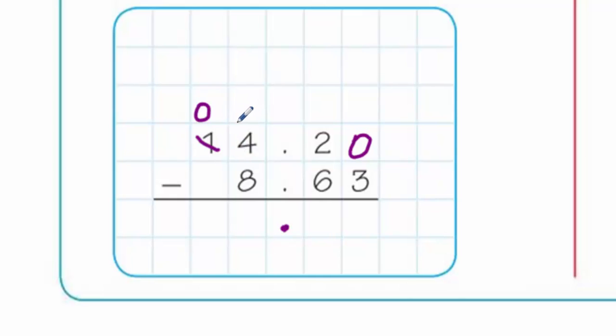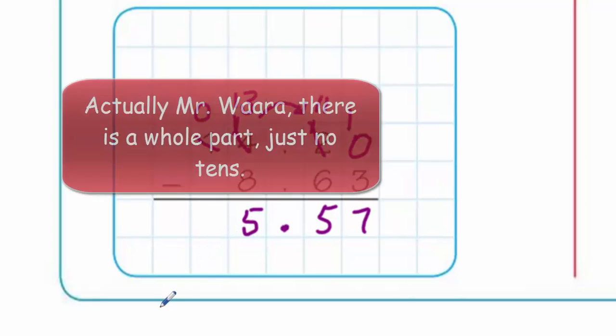He's happy to loan one of his tens to his buddy the ones column. He gives him that ten, showing we now have fourteen ones. He needs to loan because everybody's needing help, so he's going to loan one of his whole numbers. He's going to convert one whole into ten tenths, which gives him twelve tenths. But he needs to loan one of his tenths, so he goes down to eleven and gives one tenth to the hundredths. Now this guy has ten hundredths. Ten minus three is seven, eleven minus six is five, thirteen minus eight is five, and there is no whole part. Our answer is 5.57 hundredths.